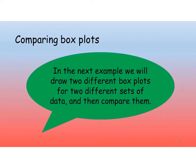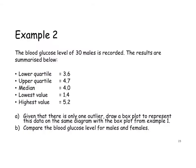What we also need to do is compare box plots — to take two different box plots and make a comparison between them. So let's take a second set of data. This time, the blood glucose level of 30 males is recorded. But we only have a summary of the data this time — not the data itself. Just the lower quartile, upper quartile, median, lowest value and highest value.